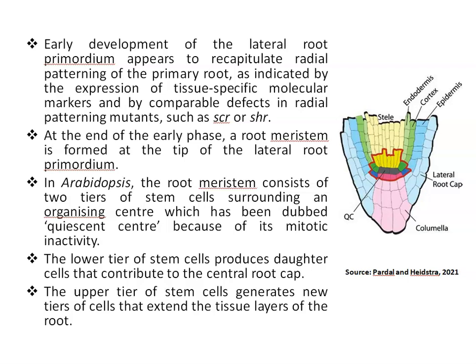Thus, one type of stem cell system drives root development, which essentially adds new tiers to the existing root. In Arabidopsis, the root meristem consists of two tiers of stem cells surrounding an organizing center dubbed the quiescent center, notable for its mitotic inactivity. The lower tier of stem cells produces daughter cells that contribute to the central root cap, while the upper tier generates new tiers of cells that extend the tissue layers of the root. The outermost ring of stem cells produces not only epidermis but also the lateral root cap. The root cap shields the root meristem against mechanical damage as the root tip grows into the soil.